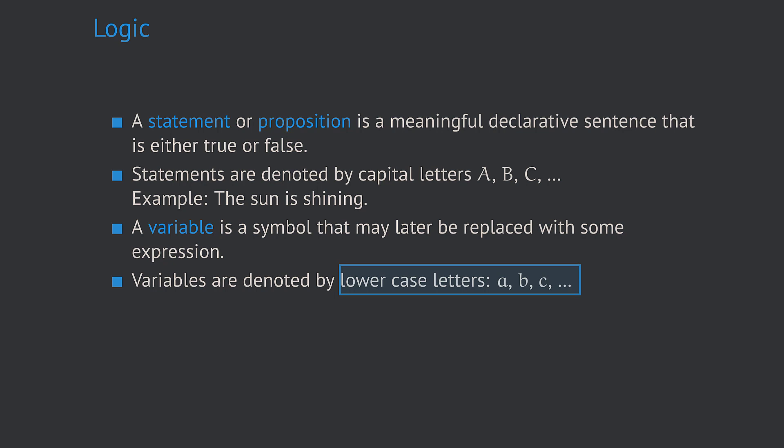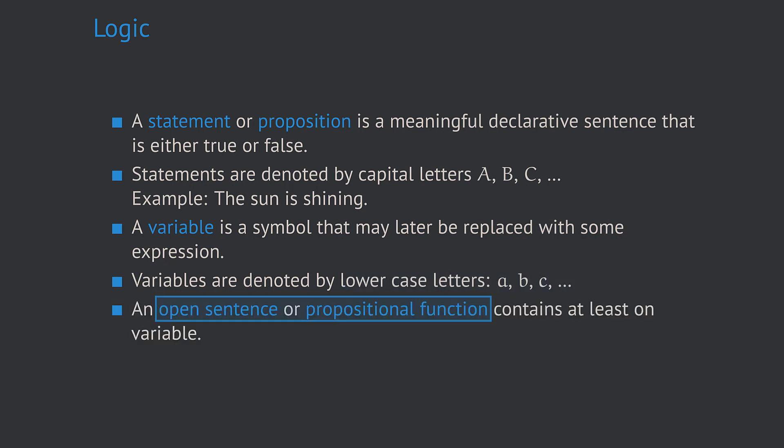A sentence containing at least one variable is called an open sentence or propositional function. An example is 'b is a divisor of 16.' As long as we don't have any more information about the value of b, we can't decide whether the sentence is true or false.